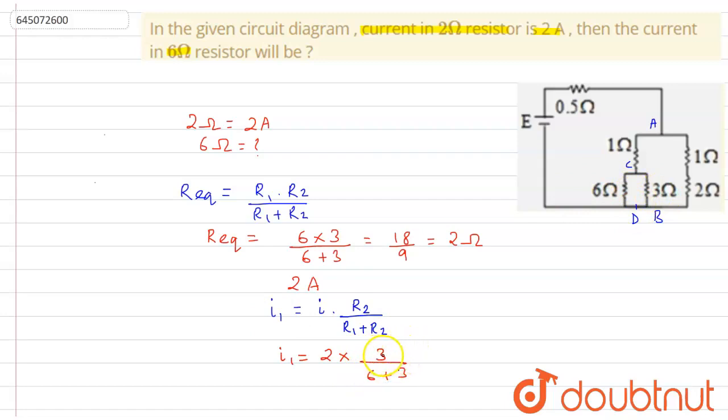So what we can see here is that this will become 6 divided by 9. So it is 2 by 3 ampere. So this is our final answer.